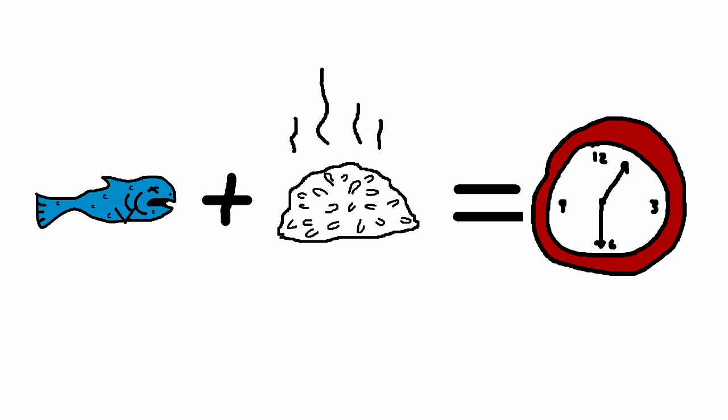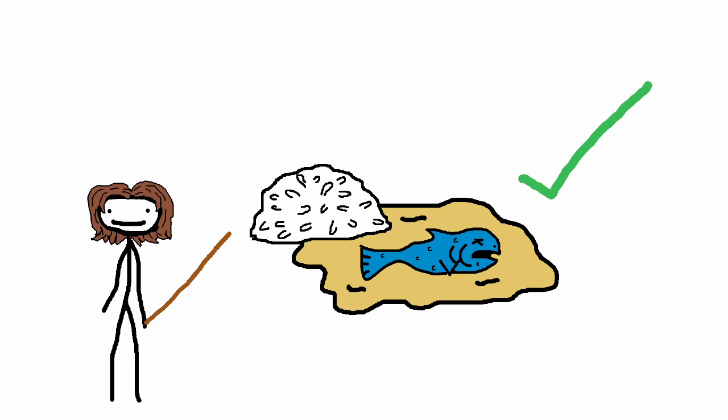But actually, the rice wasn't meant to be eaten. It was only used as a means of preservation. You see, the fermenty juices of the rice would soak into the fish and prevent it from spoiling.